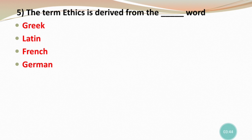Question 5: The term 'Ethics' is derived from the dash word. The options are Greek word, Latin word, French word, or German word. Ethics is derived from the Greek word 'ethos.' So the correct answer is Greek word — the term Ethics is derived from the Greek word.